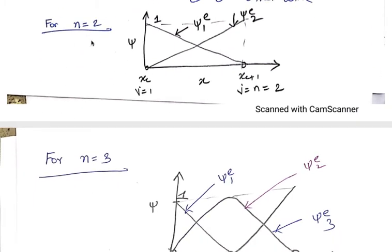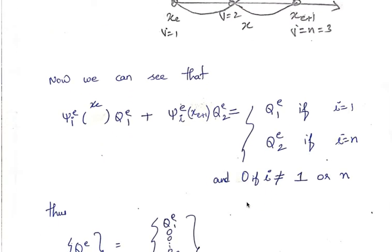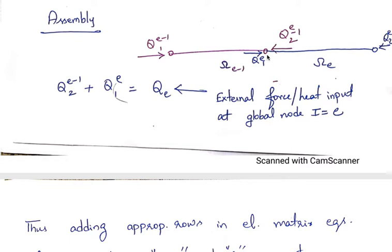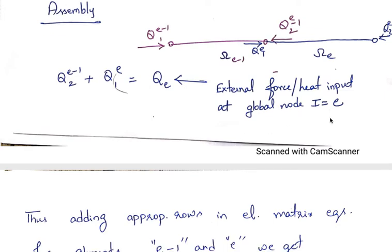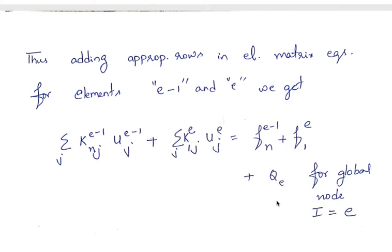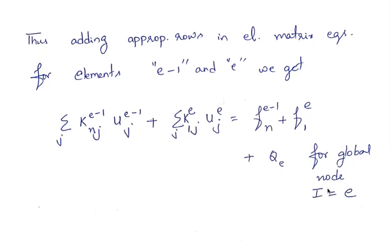Based on this definition, for n equals 2 and n equals 3 we plotted the interpolation functions. For the assembly: if a node is shared by two elements and we take an infinitesimal element length across that node, we can show that q_{e-1,2} plus q_{e,1} should equal capital Q_e, where Q_e is the external force or heat input at global node i equals e. By adding appropriate rows in element matrices e-1 and e we get a conservation statement for each global node, yielding as many equations as global nodes.